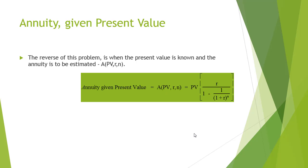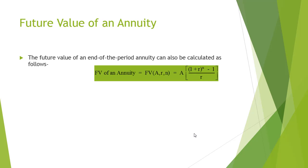The reverse of this problem is when the present value is known and the annuity is to be estimated. It can be calculated using this formula and it is annotated as A(PV, r, n). The future value of an end of period annuity can also be calculated by using this formula and it would be annotated as FV(A, r, n).